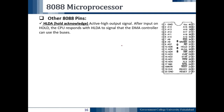The next pin is HLDA — Hold Acknowledgement — pin number 30. It is an active high output signal. After receiving input on the HOLD pin, the CPU responds with the HLDA pin to signal that the DMA controller can use the buses. DMA means Direct Memory Access, and we will study the DMA controller when we cover memory interfacing.